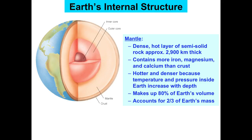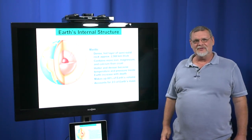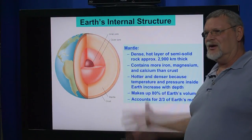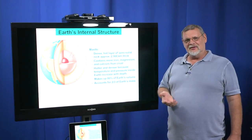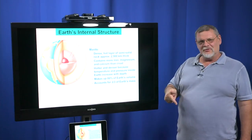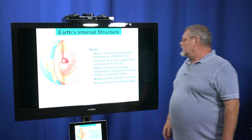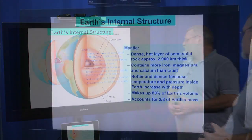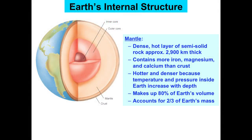The mantle is made up of a dense, hot layer of semi-solid rock. I'm not going to test you on the exact thicknesses — I just want you to know what the mantle is. It contains more iron, magnesium, and calcium than the crust, so it is denser; that's why it's further in. As you dig deeper into the Earth, temperature and pressure start to rise, which should be obvious. The core's inner temperature is the temperature of the surface of the sun, believe it or not. The mantle makes up about 80% of the Earth's volume, and we're going to talk about how the continents do what they do because of the mantle.